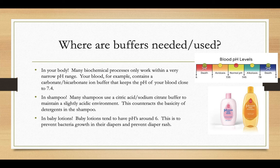Your blood, for example, has a bicarbonate ion buffer that keeps the pH of your blood close to 7.4. And you can see off to the side there, if it deviates even a little bit, if your pH goes below 7.35, you suffer from a condition called acidosis. If it goes above 7.45, alkalosis. And then if you go above 7.8 or below 7, it's not looking good for you.